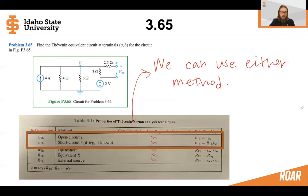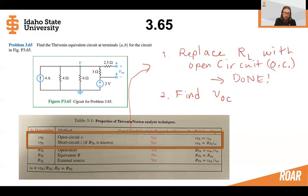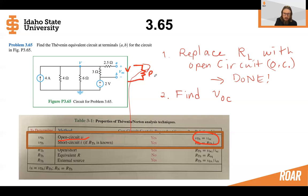We're halfway done now, so let's take a look at the Thevenin voltage. We can use either method, but let's use the open circuit method since the circuit as given in the problem statement is already an open circuit — that's what VOC means. We have an open circuit already, so the open circuit voltage is going to be equal to the Thevenin voltage. We could have a load resistor here, but it's already removed, so we just need to find the open circuit voltage.